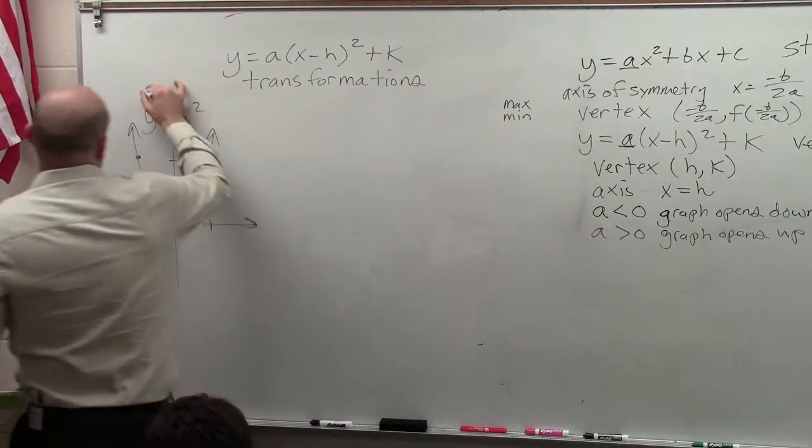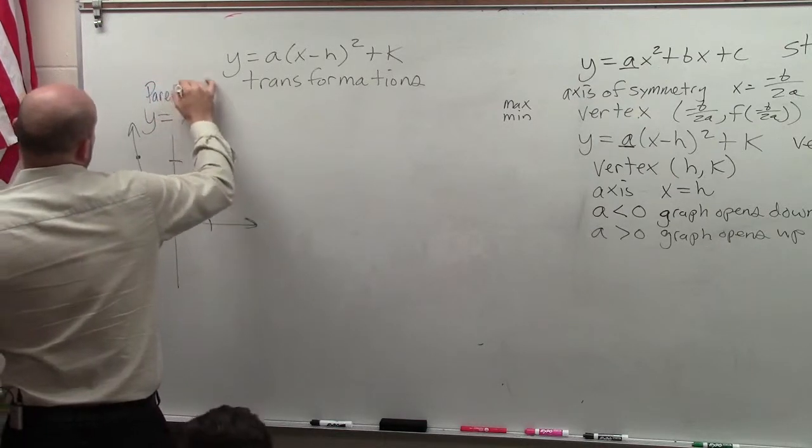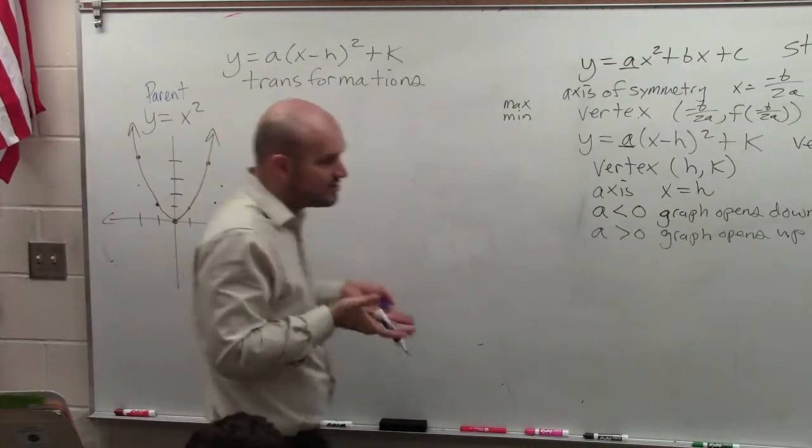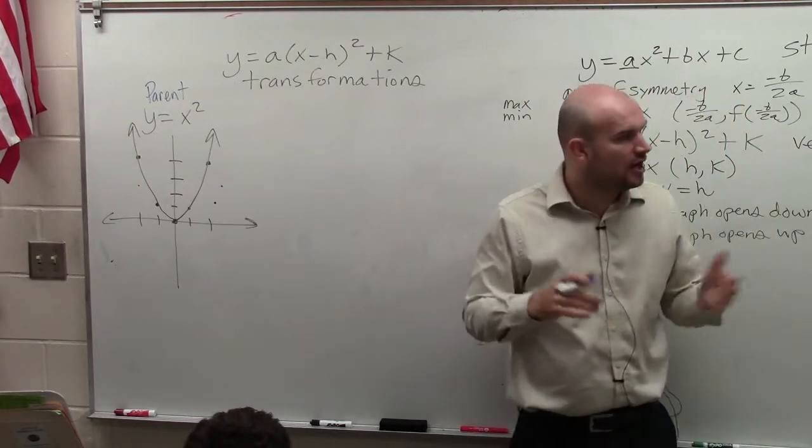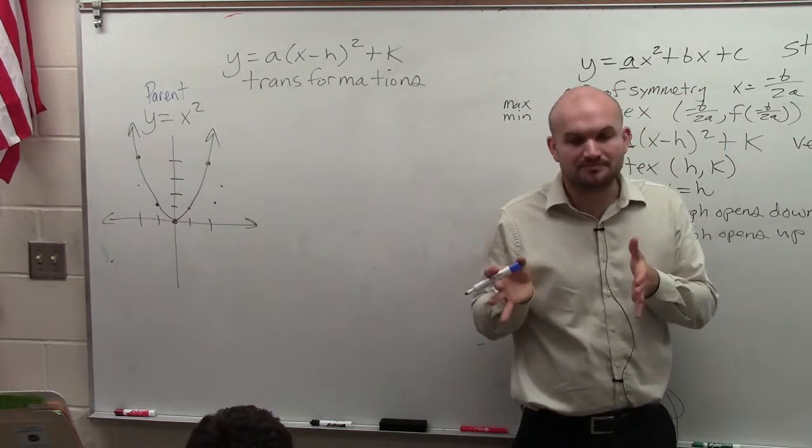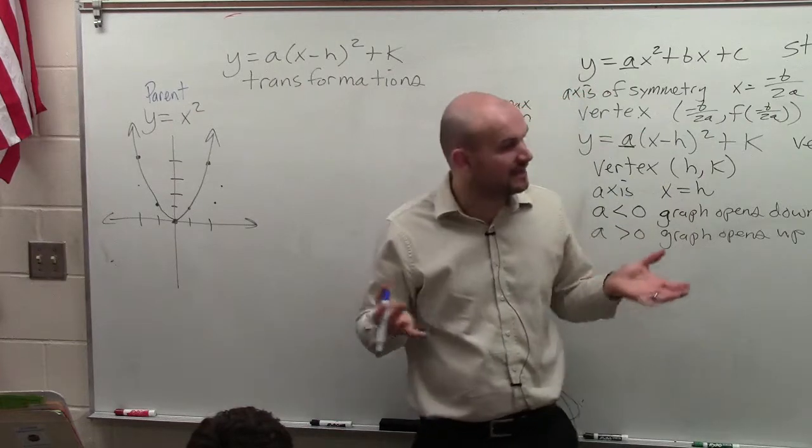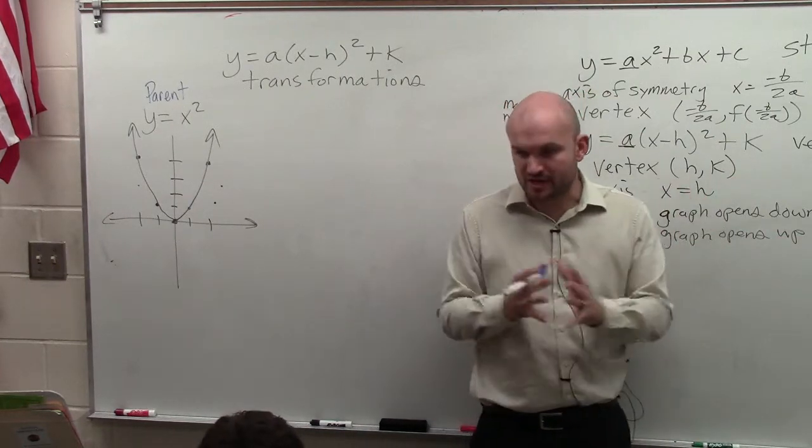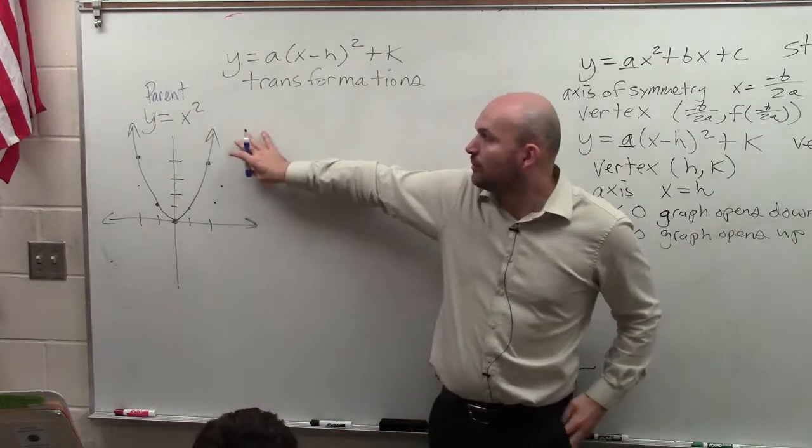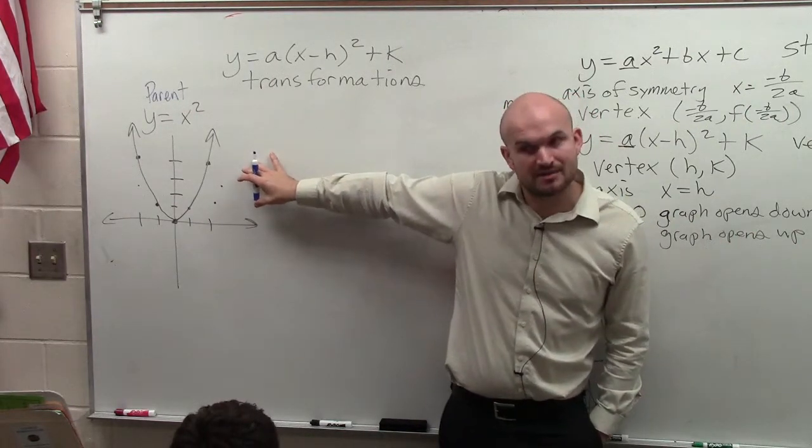Well, this is what we call the parent graph. The reason it's called a parent graph is it's just a quadratic that has no transformations. If you guys remember from geometry, transformations are a way that we can affect the shape and the orientation of the graph, shifting it left or right, dilating, shrinking it, or stretching it. So y equals x squared is the parent graph because there's no transformations on this.